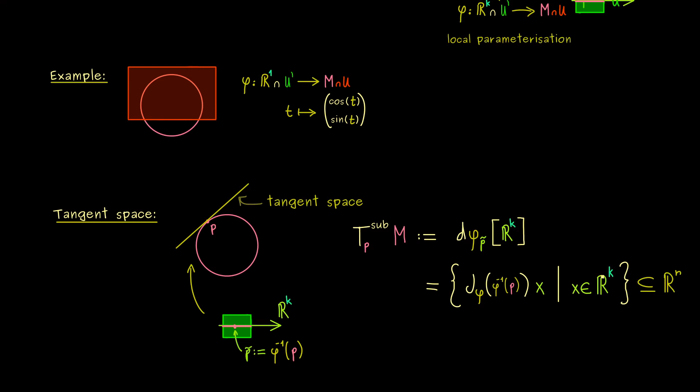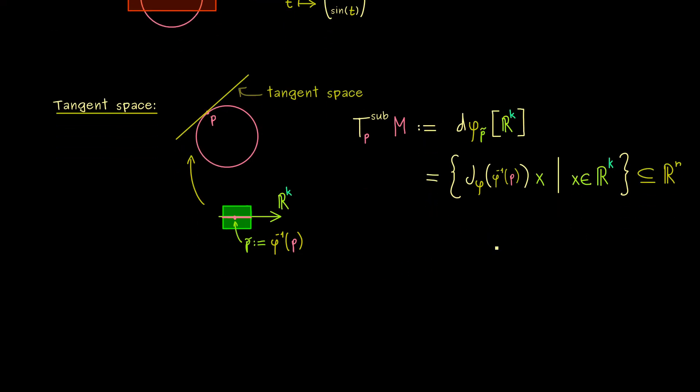So the important message here is, this is a subspace in R^n. However, the input was given by the dimension of the manifold, so by R^k. So you can remember, in general this Jacobian matrix will not be a square matrix. Okay, there we have it. This is the tangent space for submanifolds in R^n. And in order to get a feeling for it, let's immediately look at an example.